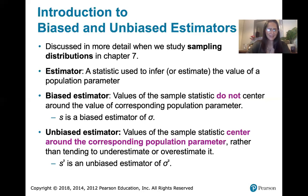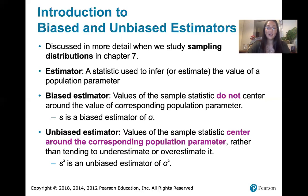Surprisingly, the sample standard deviation is a biased estimator of the population standard deviation. But when we square it, it becomes an unbiased estimator. The squared sample standard deviation, which we know to be the sample variance, is an unbiased estimator of the population variance.